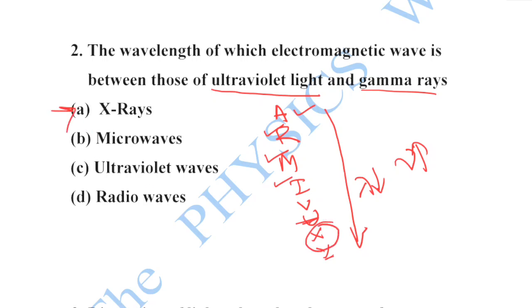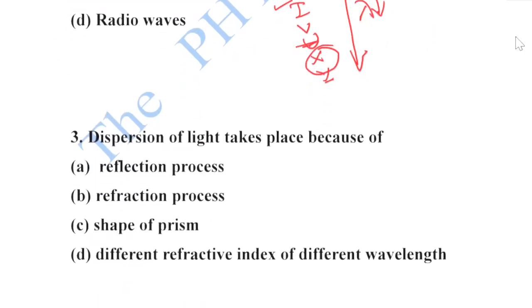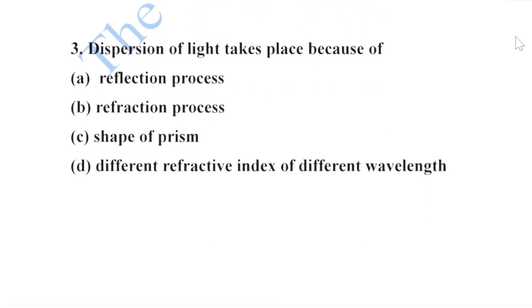Next: dispersion of light takes place because of different refractive index for different wavelengths of light. Your correct option is option D.